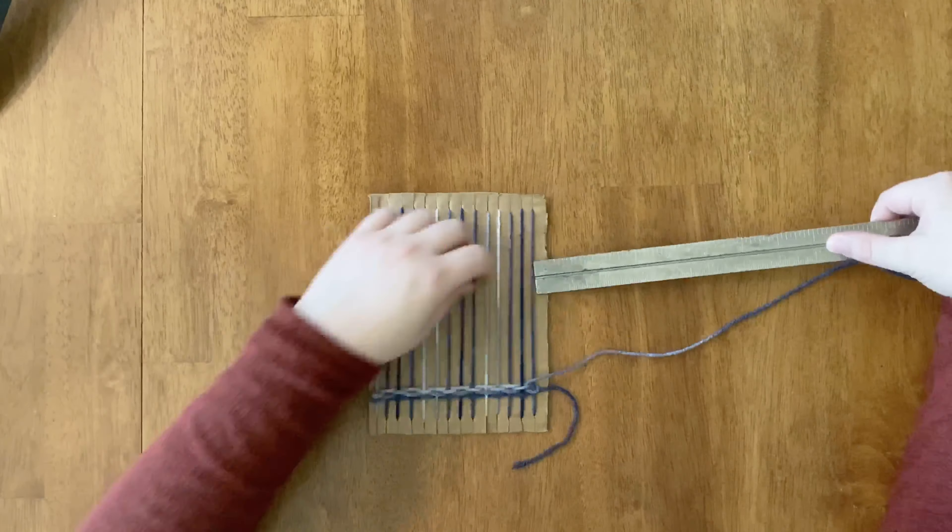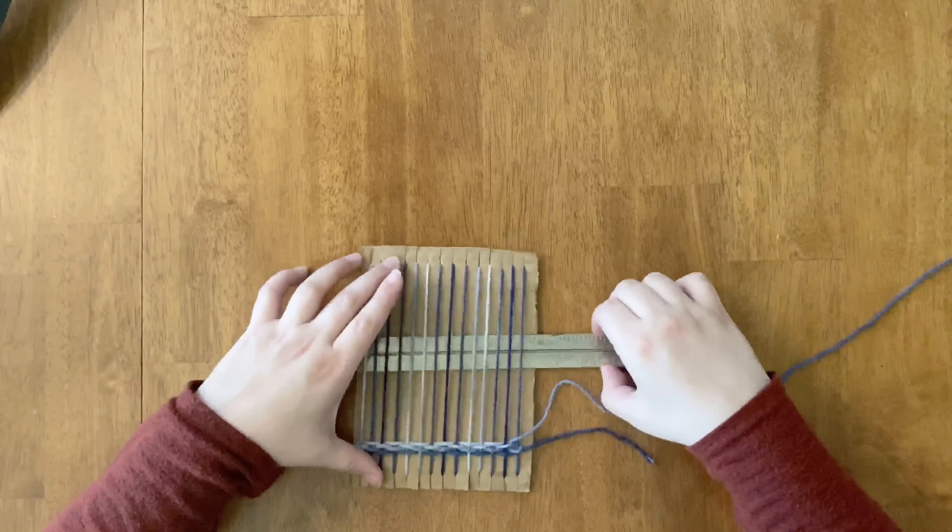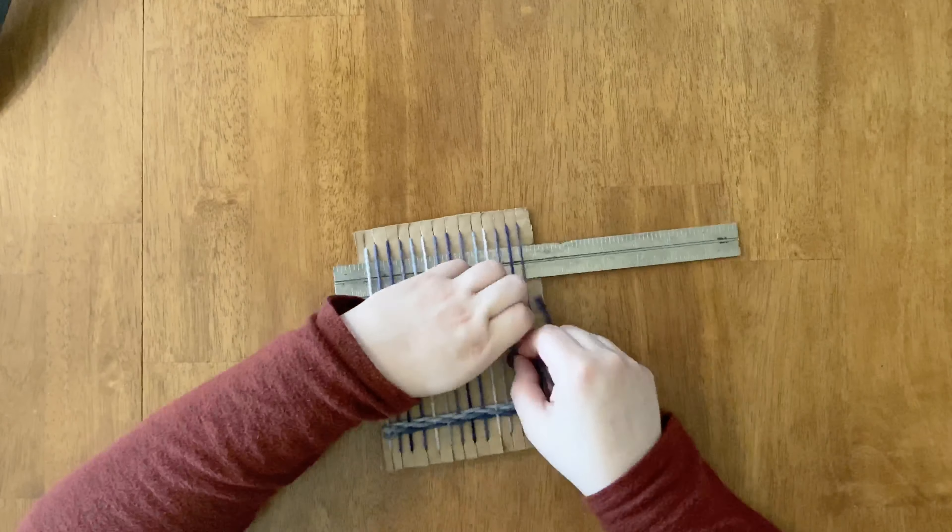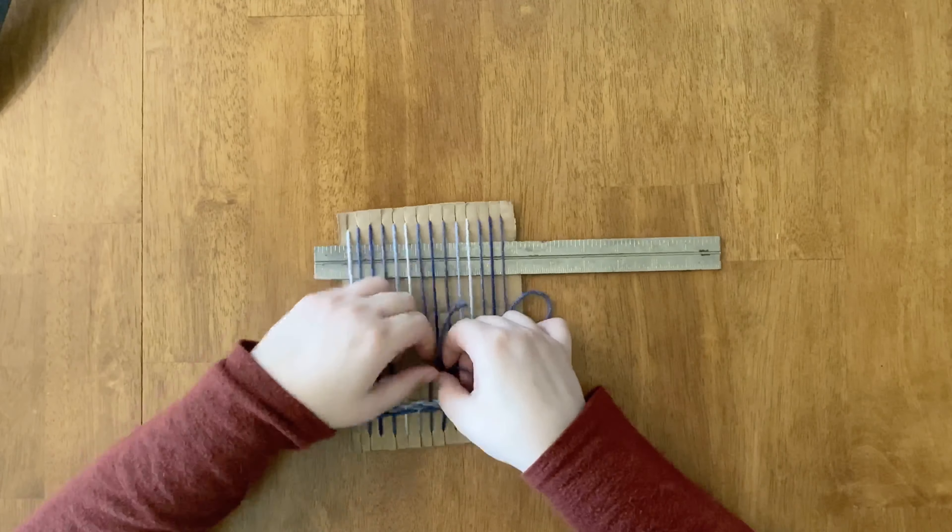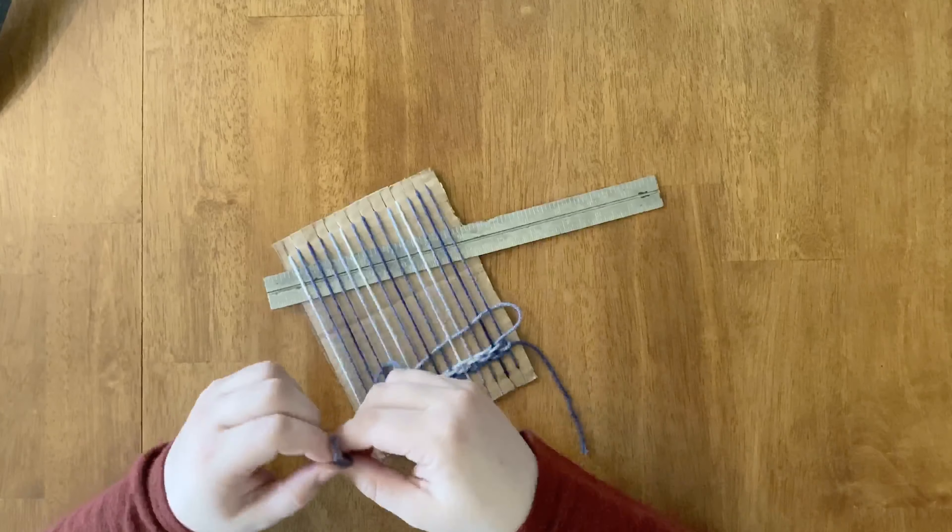Here you'll see that I insert a ruler underneath my warp strings. This is a good way to get a little bit of space in between your warp strings and your loom in case you need a little bit more room to work with while you're weaving.